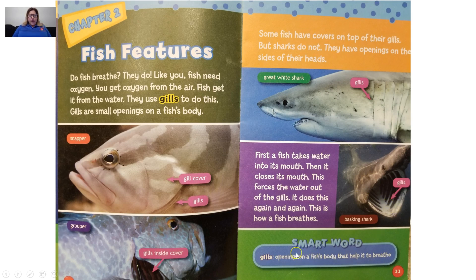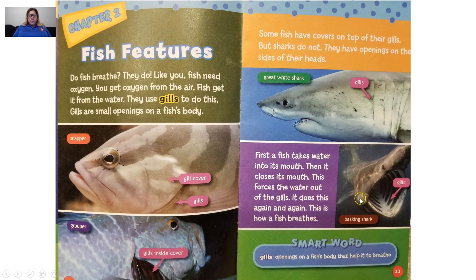The word 'gills' is in bold. This is what we call a smart word, boys and girls — another word for a vocabulary word we're going to be focusing on in these two pages. Gills are openings on a fish's body that help it to breathe. We have seen several photographs of a snapper, a grouper, a great white shark, and a basking shark, and we can see the differences of how their gills look.